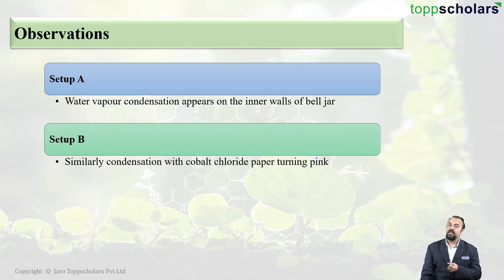In case of setup B, similar condensation is seen but this time, there is a change in the colour of the cobalt chloride paper. It turns from sky blue to pink. Yes, students?